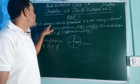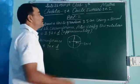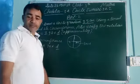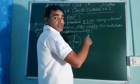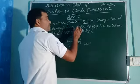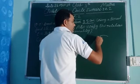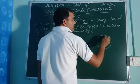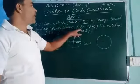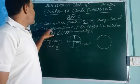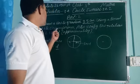हमने एक question लिया है exercise number 14.2 का। Let us see what you have to do in this question: Draw a circle of radius 3.5 cm। Radius का मतलब है — आप अपने compass और pencil में 3.5 cm का radius लेंगे, जैसे previous exercise में आपने circles बनाए होंगे। इसमें भी 3.5 cm का radius लेकर एक circle बना दीजिए।